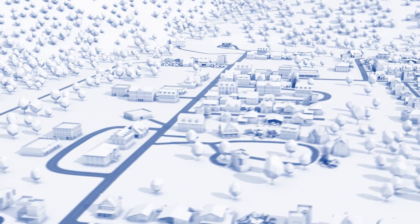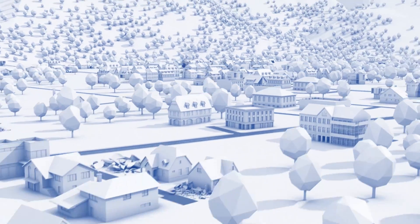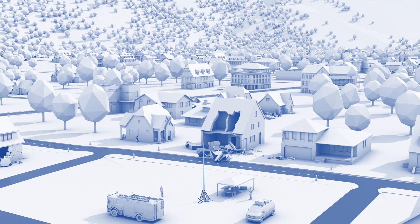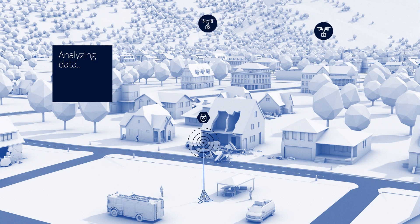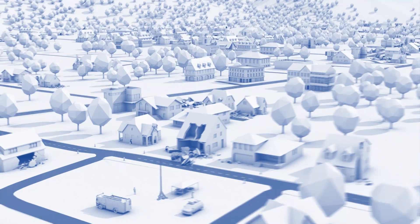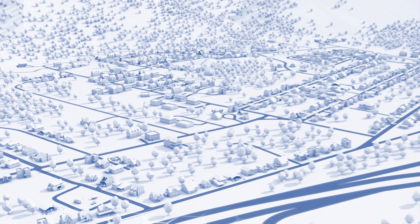Nokia Ultracompact Network makes this all possible over LTE broadband. Back at the control center, this data gives the incident commander a detailed picture of the situation. Using these insights, rescue teams can prioritize their work, saving valuable time.